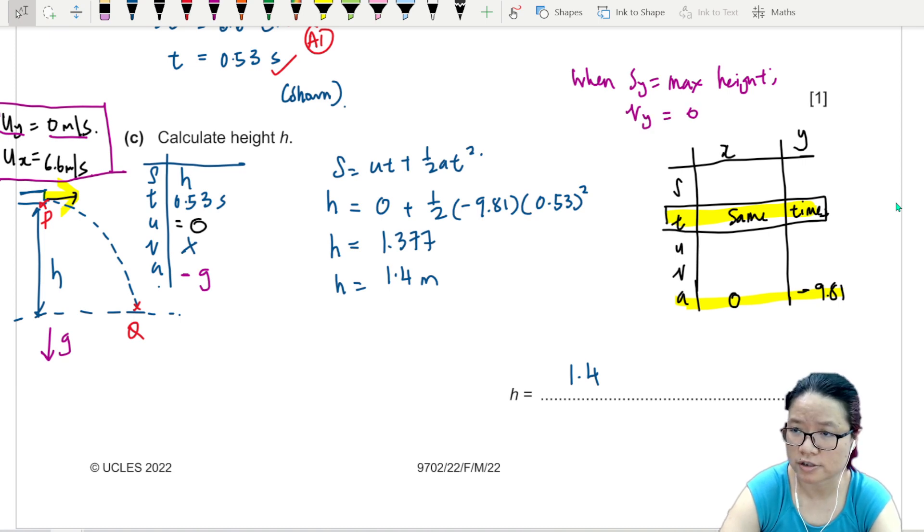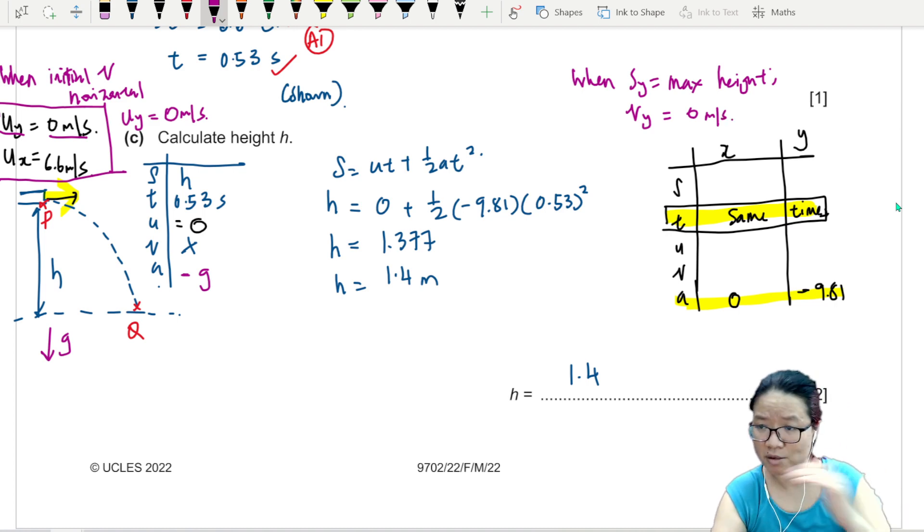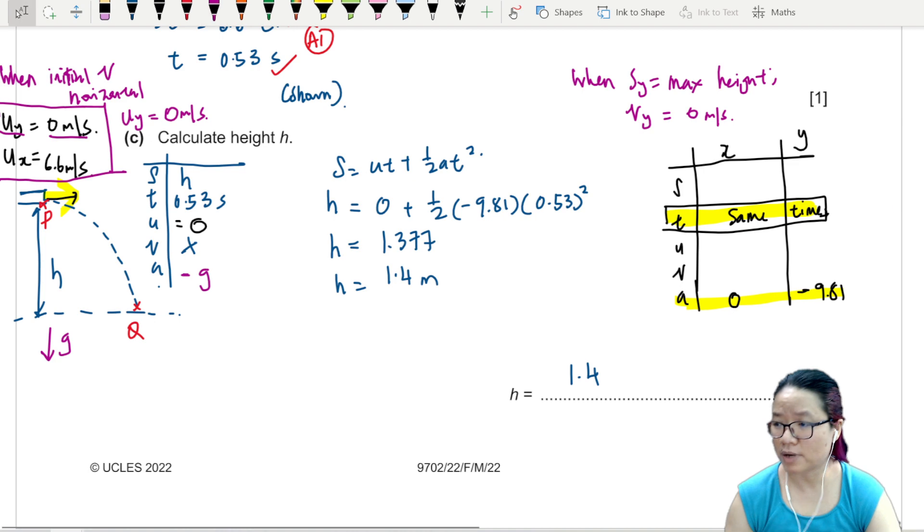And a few conditions here. When the initial component is horizontal, initial velocity is horizontal, uy initial speed in the vertical direction is 0. No need to memorize. It's quite logical if you understand the motion. If not, go and do a bit of revision yourself. So the two marks here.